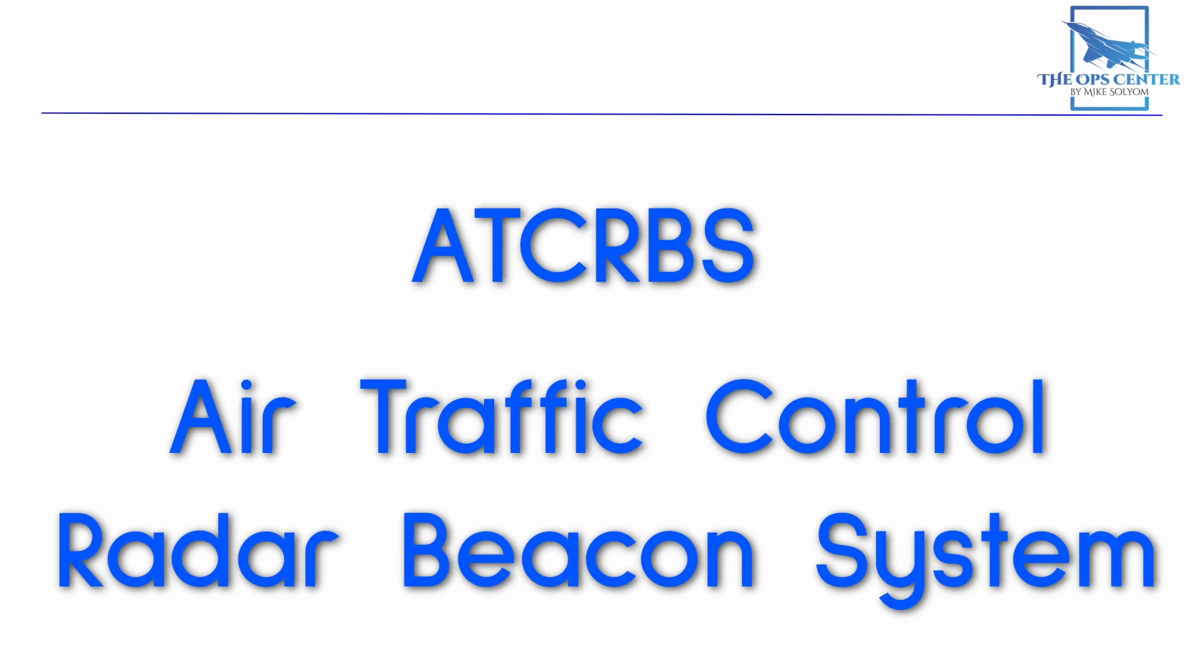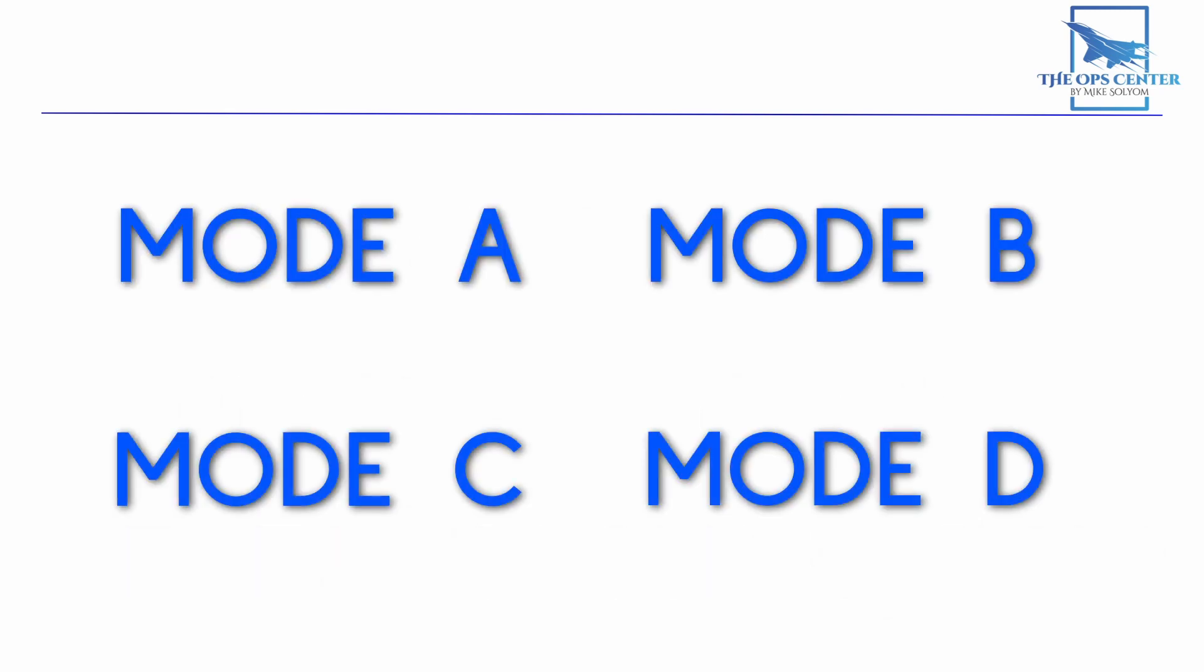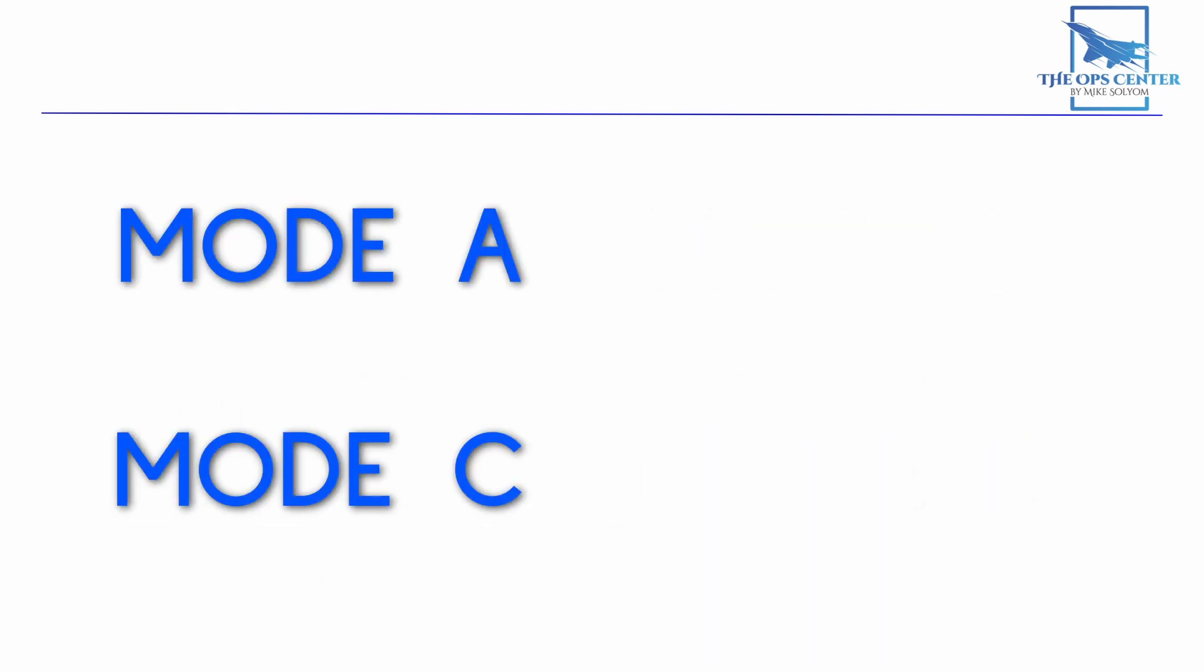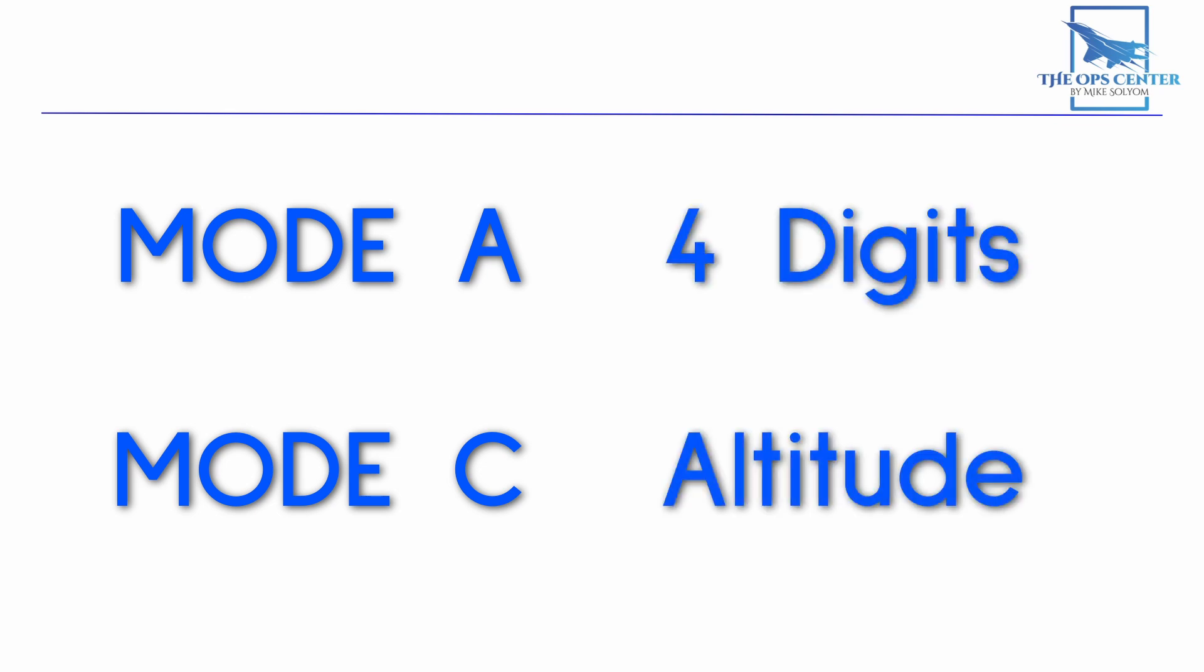When in civilian use, the system of interrogators and transponders is known as ATC-RBS, which stands for Air Traffic Control Radar Beacon System. Modes B, C, and D were also defined, but of these four, only A and C are regularly used. An aircraft with both mode A and C equipment installed will reply to interrogation signals with a four-digit mode A response and the number indicating altitude in hundreds of feet for mode C. So two separate replies.